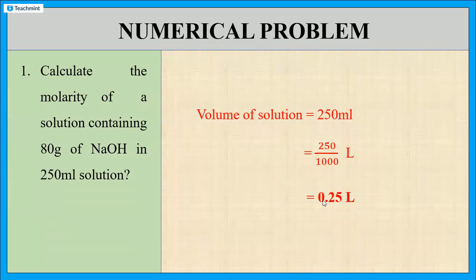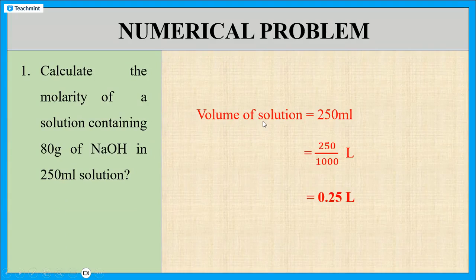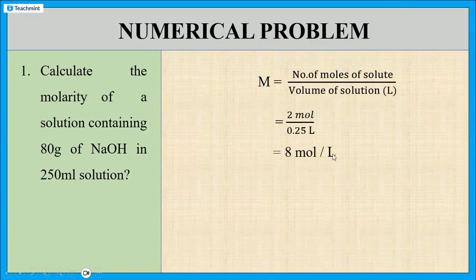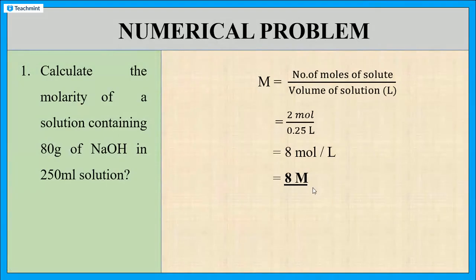Now, we know the value of number of moles of sodium hydroxide as well as volume of the solution. Then, molarity M equals substitute that values to this equation, that is, 2 mole divided by 0.25 liter. And 2 by 0.25 is nothing but 8 mole per liter. It is also written as 8 M, capital M, that is, the unit of molarity.